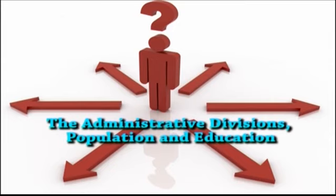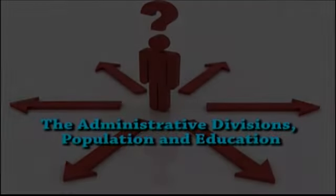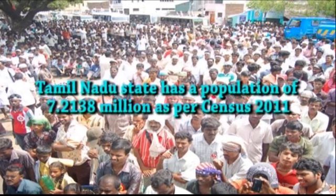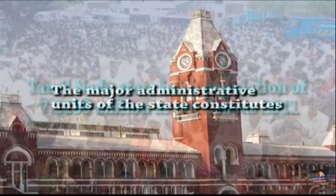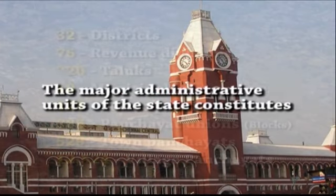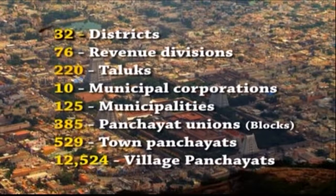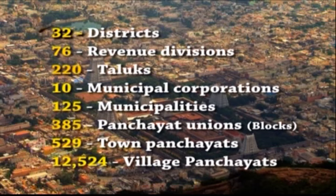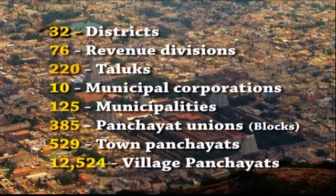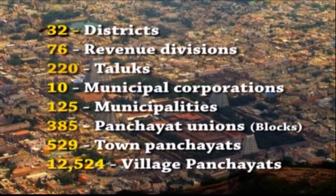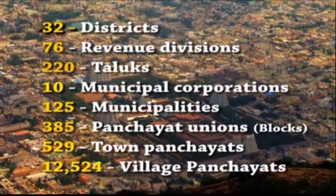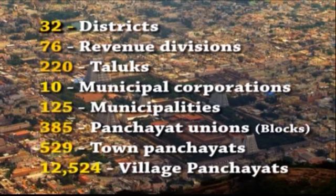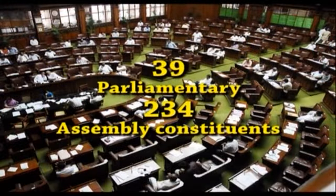Tamil Nadu has a population of 72.138 million as per Census 2011. The major administrative units of the state constitute 32 districts, 76 revenue divisions, 220 taluks, 10 municipal corporations, 125 municipalities, 385 panchayat unions or blocks, 529 town panchayats, and 12,524 village panchayats. There are 39 parliamentary and 234 assembly constituencies in Tamil Nadu.